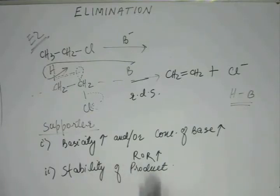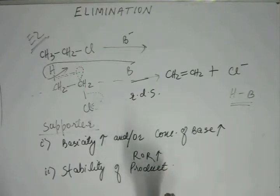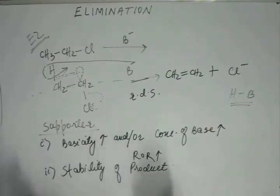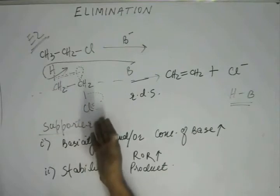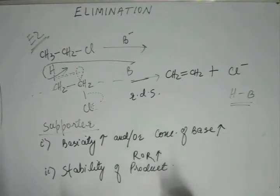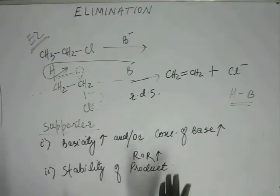Reactions are judged according to thermodynamic or kinetic aspects. Thermodynamic aspect means we look at the stability of the product. Kinetic aspect means we look at the rate of reaction — the product which forms at the fastest speed becomes the major product, even if it may not be the most stable. The big question is how we will decide the major product in the case of E2, using the two factors that enhance its rate.